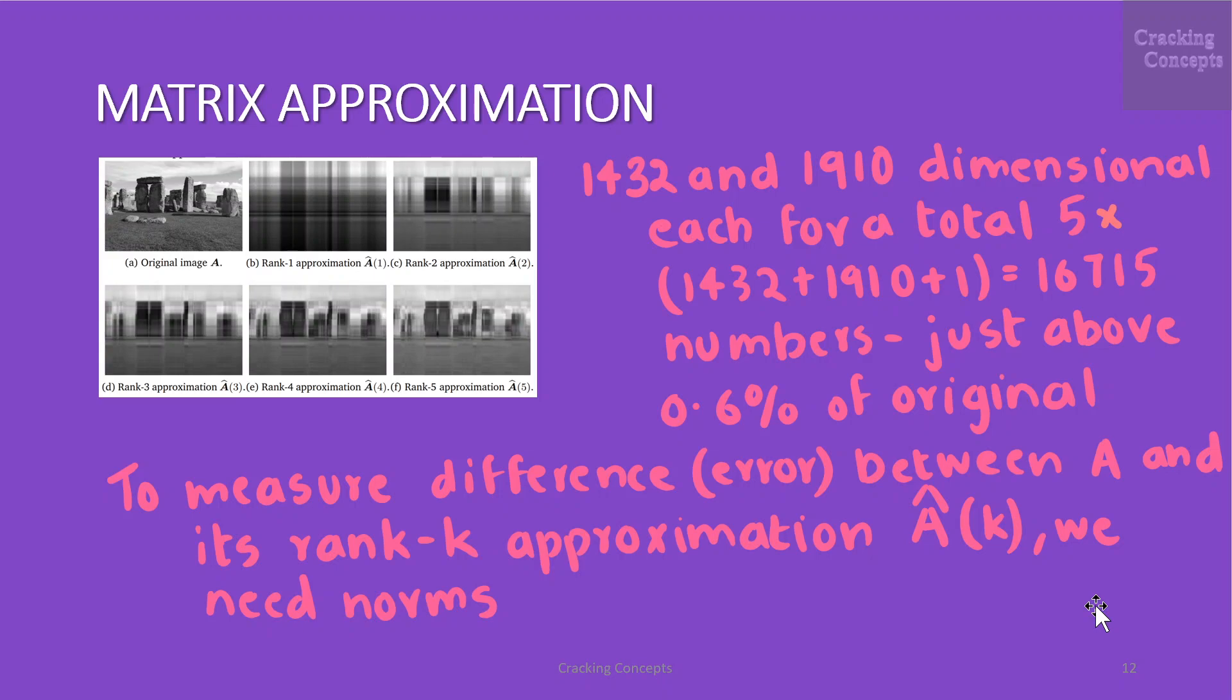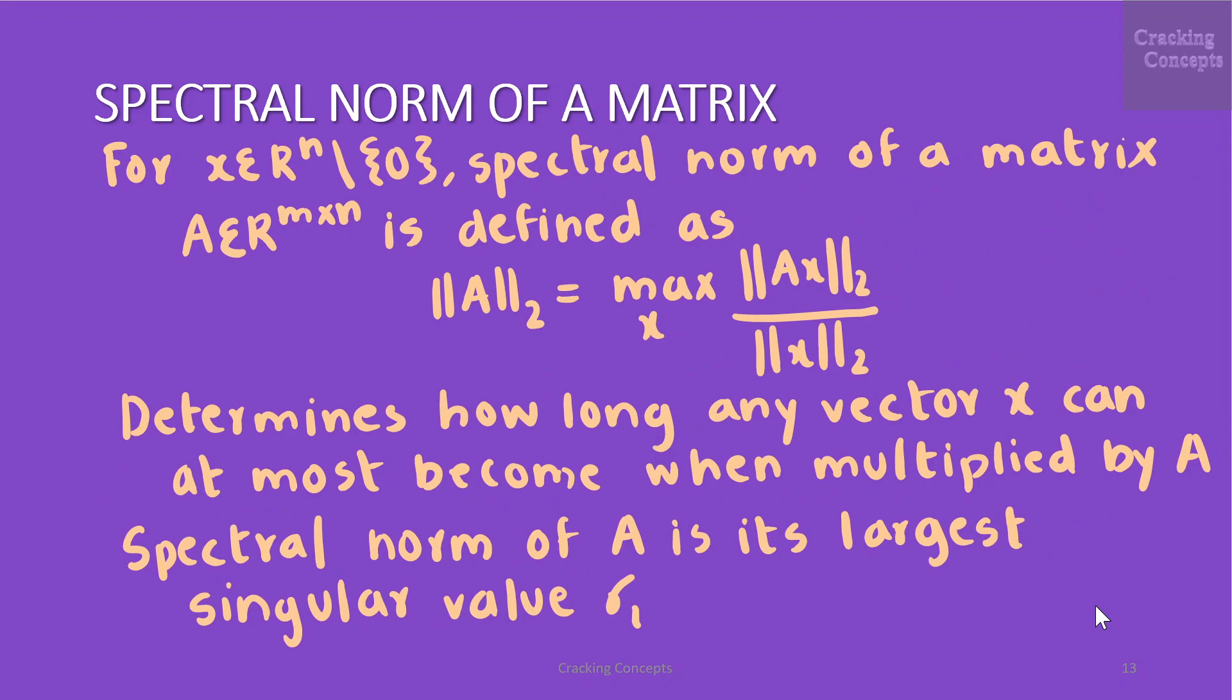To measure the difference or error between A and its rank k approximation we need to know the notion of a norm. Now we will see the spectral norm of a matrix. For x belonging to the n-dimensional space other than 0 vector, spectral norm of a matrix A belonging to m × n dimension space is defined as Euclidean norm of A given by maximum of x, Euclidean norm of Ax by Euclidean norm of x. The spectral norm of A is its largest singular value given by σ_1.